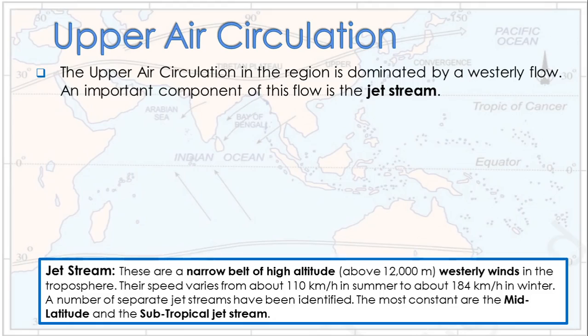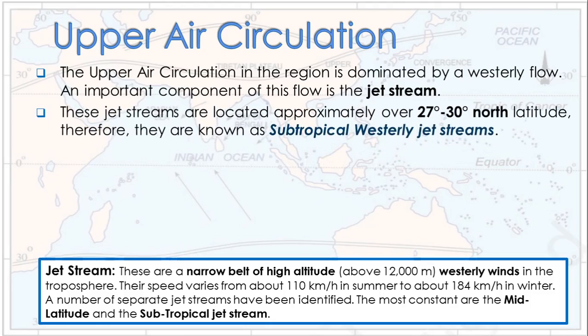These are westerly winds in the troposphere. Their speed varies from about 110 km per hour in summer to about 184 km per hour in winter. A number of separate jet streams have been identified. The most constant are the mid-latitude and the subtropical jet stream, located approximately over 27 to 30 degrees north latitude, and therefore known as subtropical westerly jet streams.